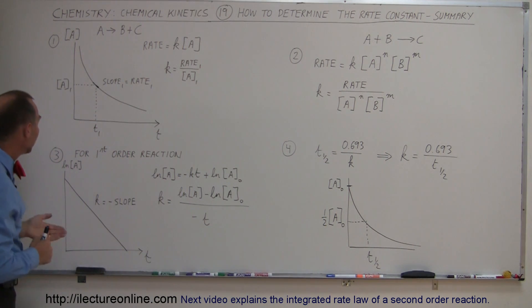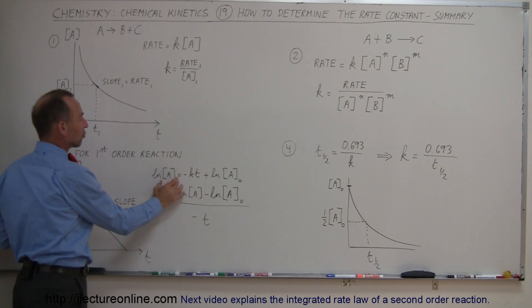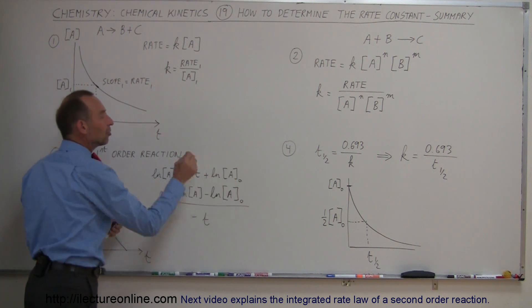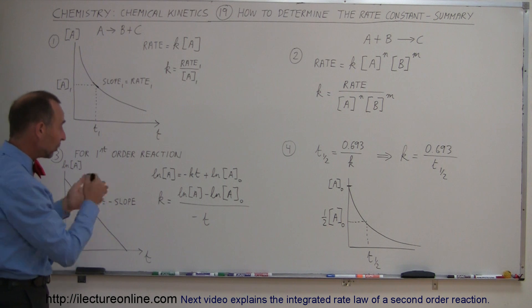Another way in which we can find K is to go back to our logarithmic equation, where we have the natural log of the concentration of A, the reactant, is equal to minus KT, plus the natural log of the original concentration of the reactant. So if we solve that equation for K,